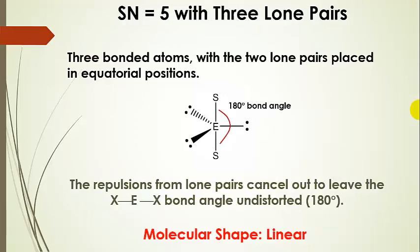If we have three lone pairs on the central atom, all three go in equatorial positions, leaving just two bonded atoms. This gives us a linear shape. All of the repulsions cancel out any distortions in the bond angle — because we have lone pairs in all three equatorial positions, there are no distortions. The bond angle is 180 degrees and we call this a linear shape, just like steric number 2, except now steric number 5 also produces a linear shape with three lone pairs in the equatorial positions.